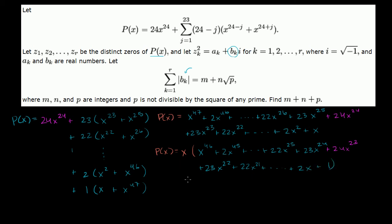Now x equals 0 is clearly a root. It's actually not going to matter much, because if you square 0, it's not going to have an imaginary part. So the absolute value of its imaginary part won't contribute to this sum. We really care about the roots of everything else — all the stuff in parentheses.